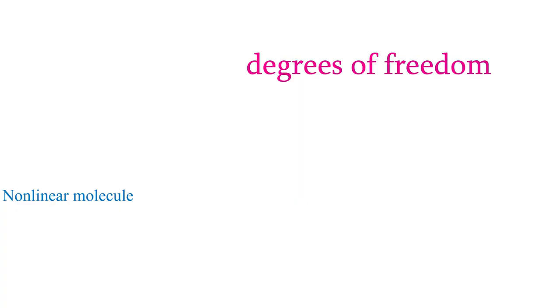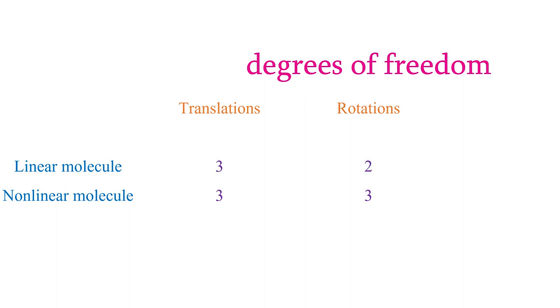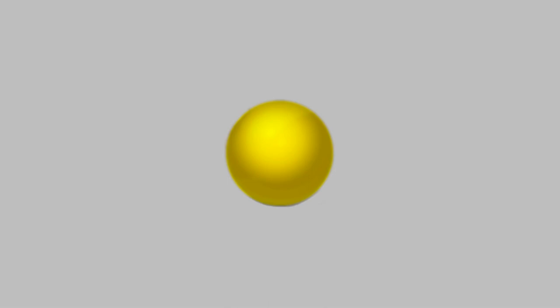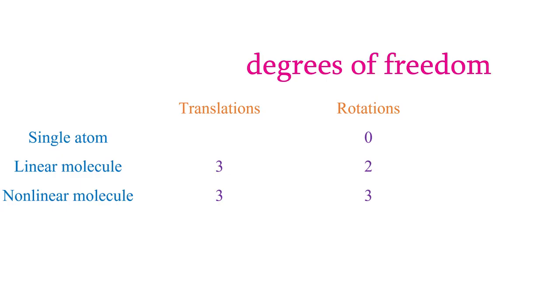That means for a nonlinear molecule there are three translational and three rotational degrees of freedom, while for linear molecules there are three translational but only two rotational. Now imagine what happens if we just have one atom, like a helium atom. Single atoms are nearly spherical, so rotating around the x, y, or z axis has no effect — there are no rotational degrees of freedom for a single atom. However, there are still three translational degrees of freedom, because the atom can noticeably move in any of the three dimensions.